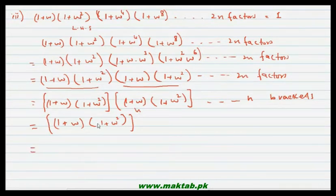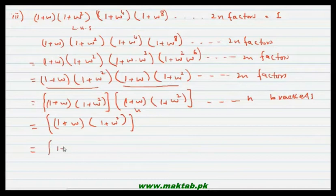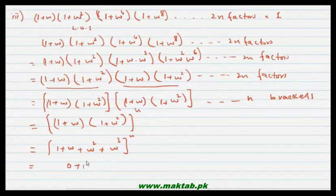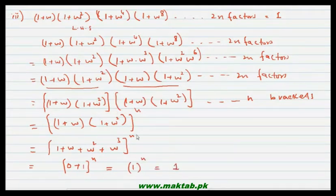Isko solve kiya ja sakta hai — inko aapas mein multiply karenge to yeh ban jayega: (1 + omega + omega square + omega cube) whole raised to power n. And you know 1 + omega + omega square is 0, plus omega cube is 1, so 0 plus 1 raised to power n, which is 1 raised to power n, and is equal to 1. So left hand side is equal to right hand side.